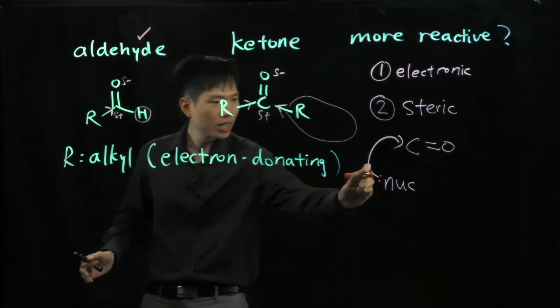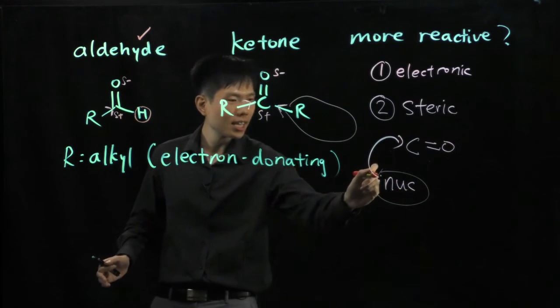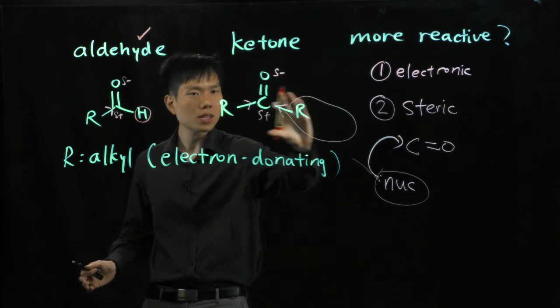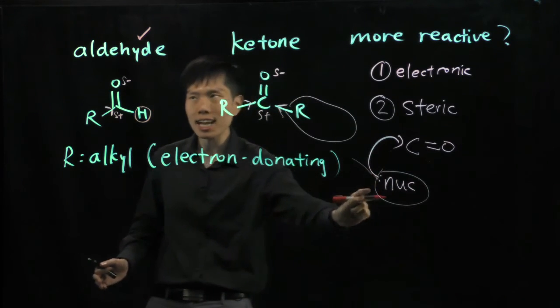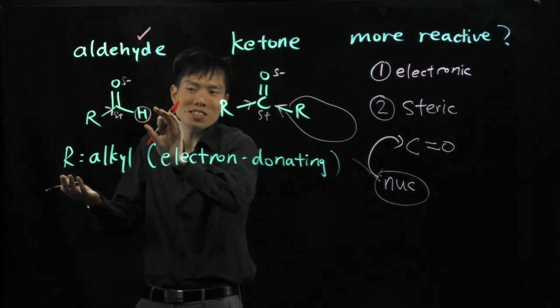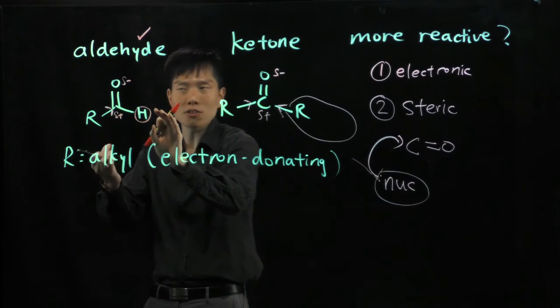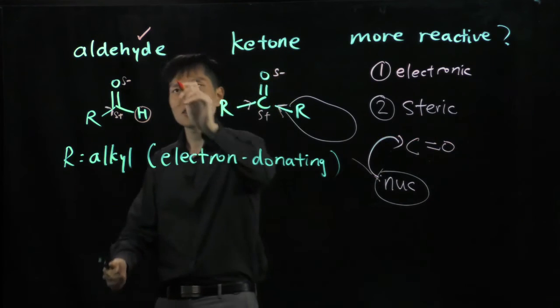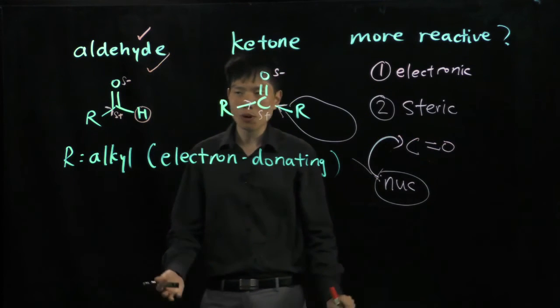A nucleophile has electron cloud around it. We would like to avoid big electron clouds if possible and attack the aldehyde if it can, because it's only a hydrogen, a very tiny electron cloud. So going by the steric factor, aldehyde is more reactive.